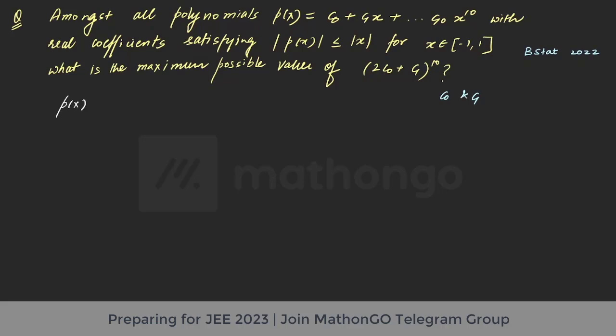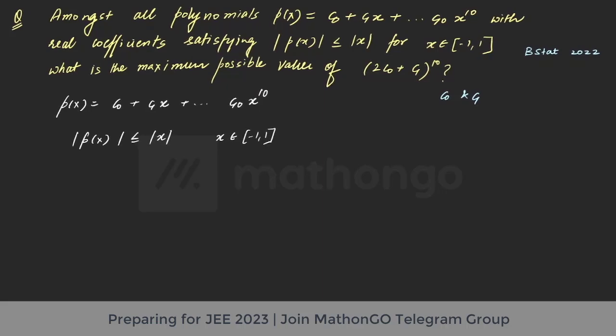Now the polynomial f(x) is given to be something of c0, c1x and then it goes till c10 x raised to power 10. So if we write this |f(x)| ≤ |x|, especially for x belonging to [-1, 1]. Now this is something which is very interesting and something which you can remember for later usage: this particular thing that is |f(x)| or |f(x)| less than equal to |x|.